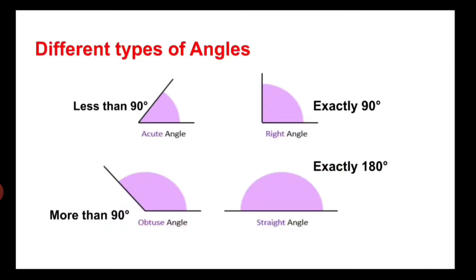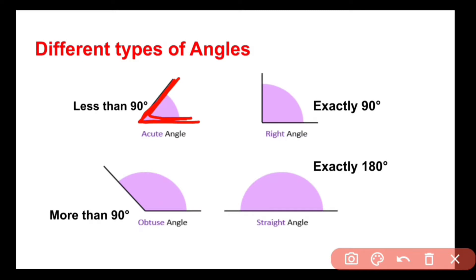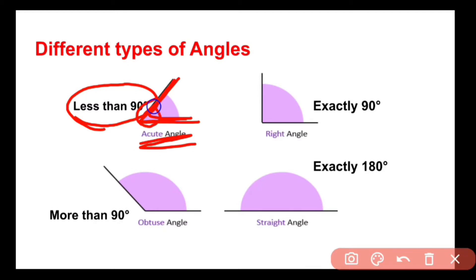We can have different types of angles. Here we can see four different types. The first type is an acute angle. In an acute angle, the two rays or arms are close to each other. When the two arms are close to each other, the measure of the angle is less than 90 degrees. So when the measure is less than 90 degrees, such an angle is known as an acute angle. If you place a protractor on the vertex and measure, it will be less than 90 degrees.